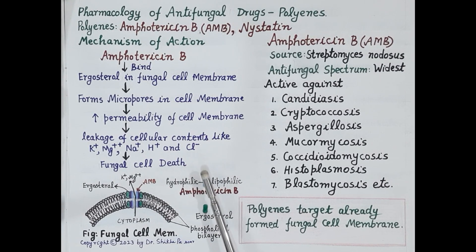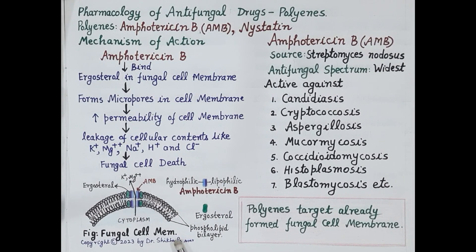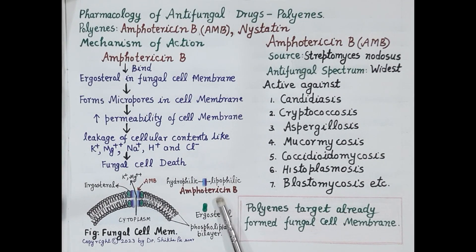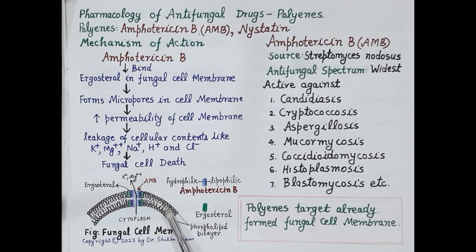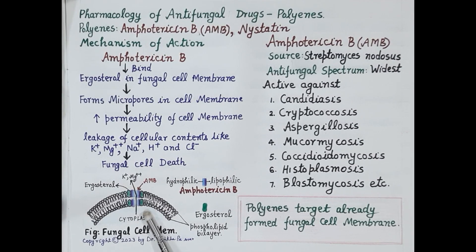This is the mechanism of action by which polyenes kill fungal cells. It is very important to understand that polyenes target the already-formed fungal cell membrane and destroy it — they bind to ergosterols, increase cellular permeability, and cause fungal cell death.